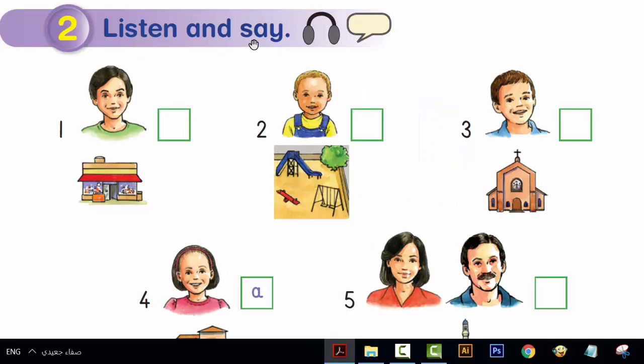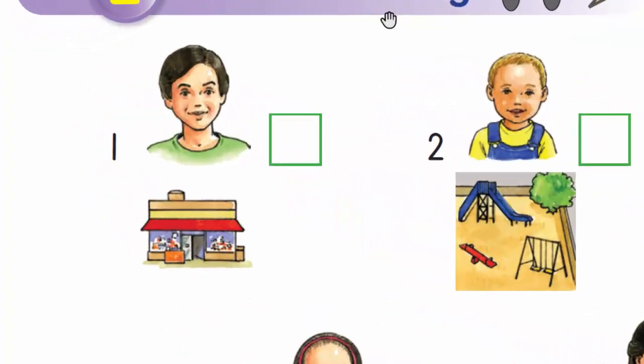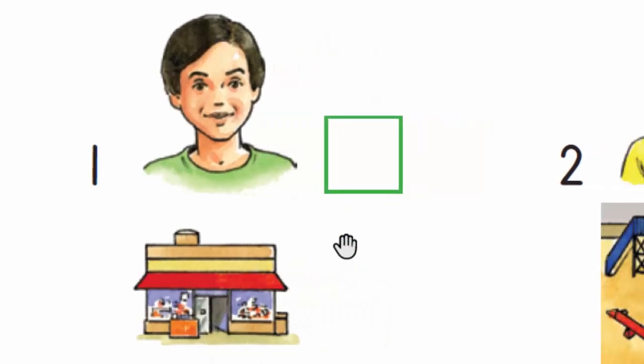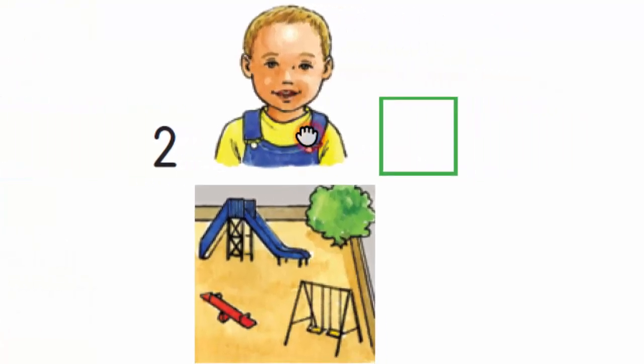Listen and say. Where's Sammy? At the shop. Where's Zaid? At the playground.